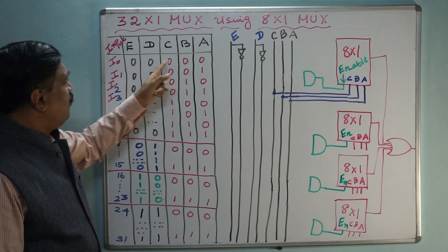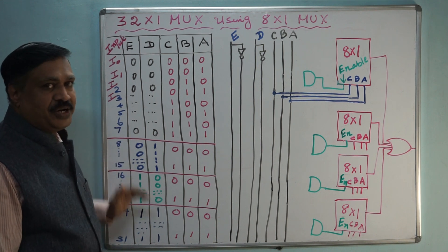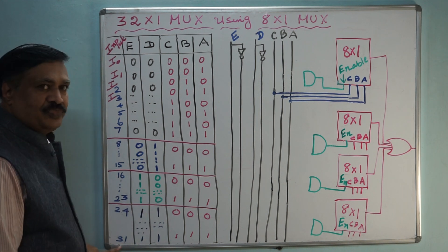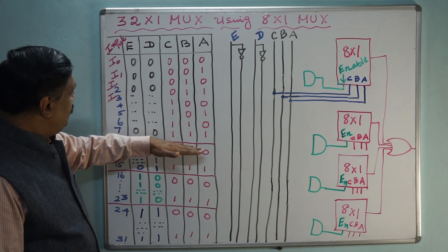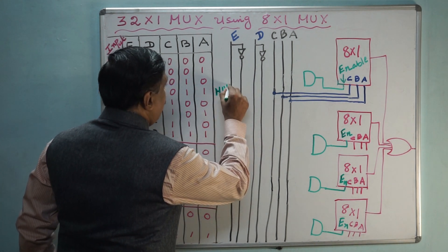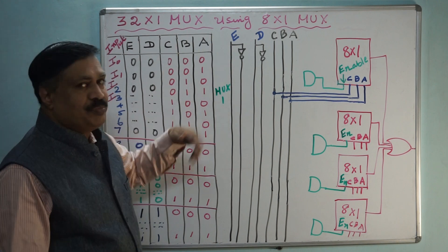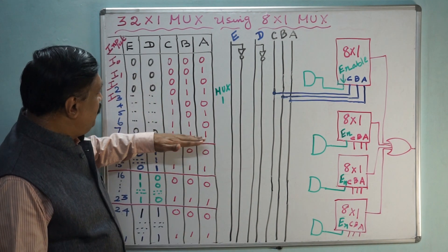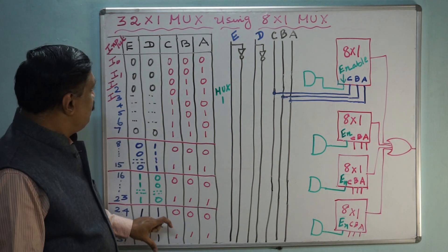For 32 inputs, five variables should be there — then only we can go from 0 to 31. Here I have marked I0, I1, I2, I3 up to I31. A, B, C, D, E are the variables. I have divided the inputs into 8 parts. This one is for multiplexer 1, and we are going to use 8 by 1 multiplexers — that means we require 4 eight-by-1 multiplexers. I have divided the table into 4 parts, marked with different colors for better clarity.